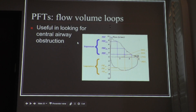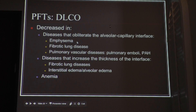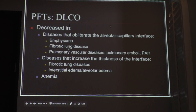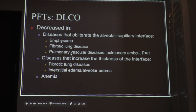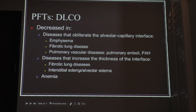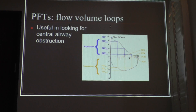Any disease that results in obliteration of the alveolar-capillary interface — like emphysema, fibrosis, or pulmonary vascular disease like pulmonary arterial hypertension — can result in a decreased DLCO. Any disease that increases the thickness of the interface, either fibrotic lung diseases or interstitial edema like pulmonary edema, can also interfere with the DLCO. And anemia — if they give you a very anemic patient, don't let them trick you — that's a common cause of decreased DLCO.